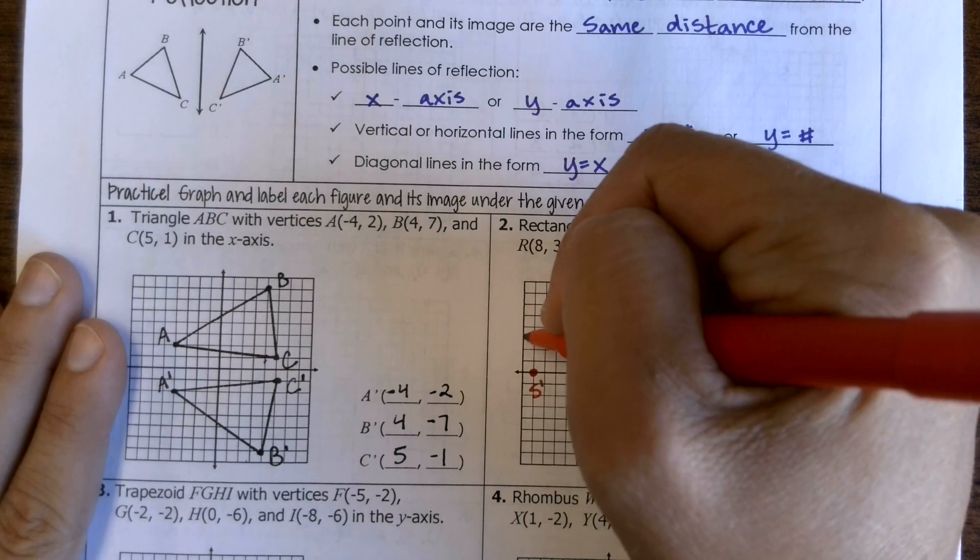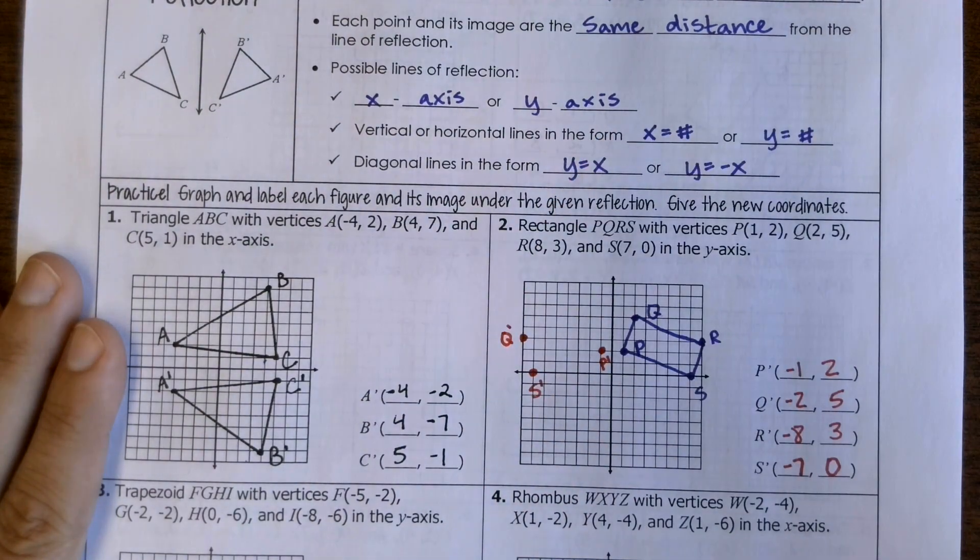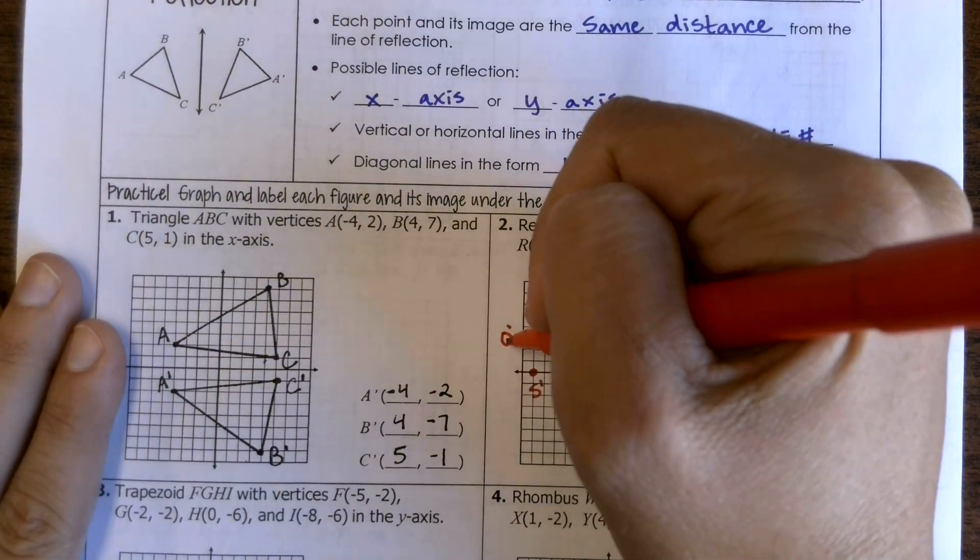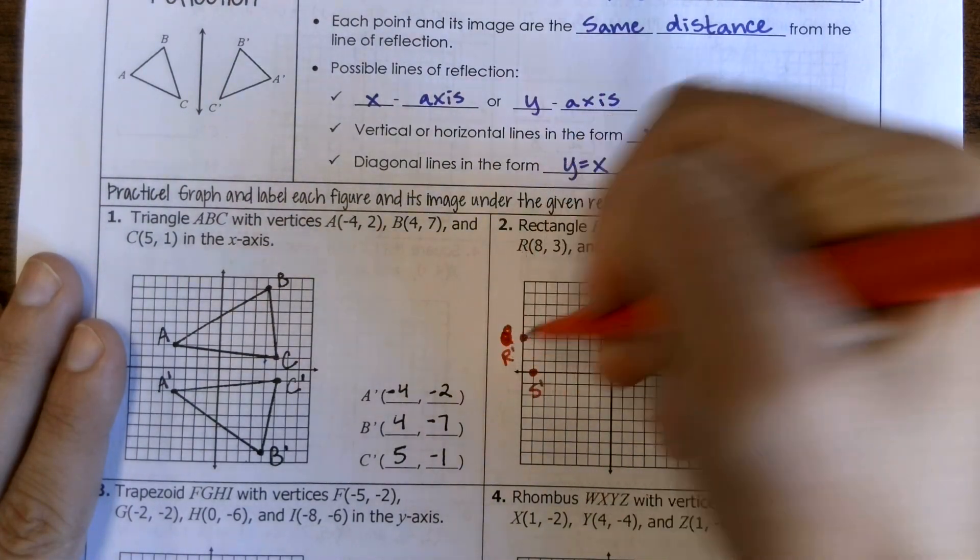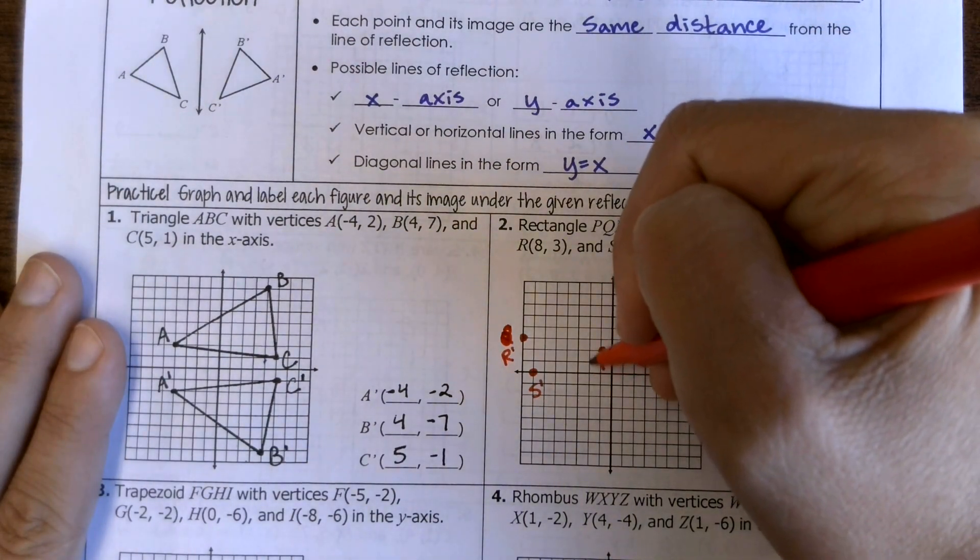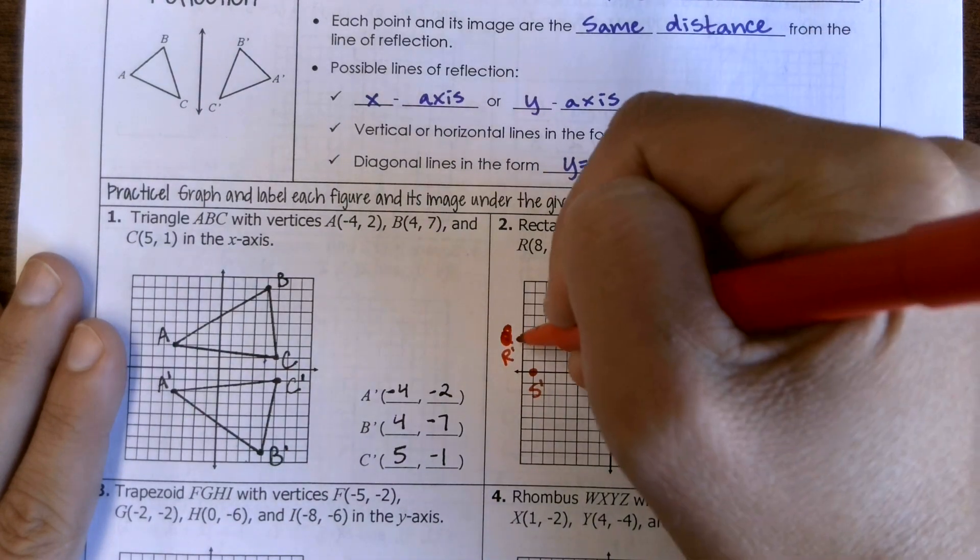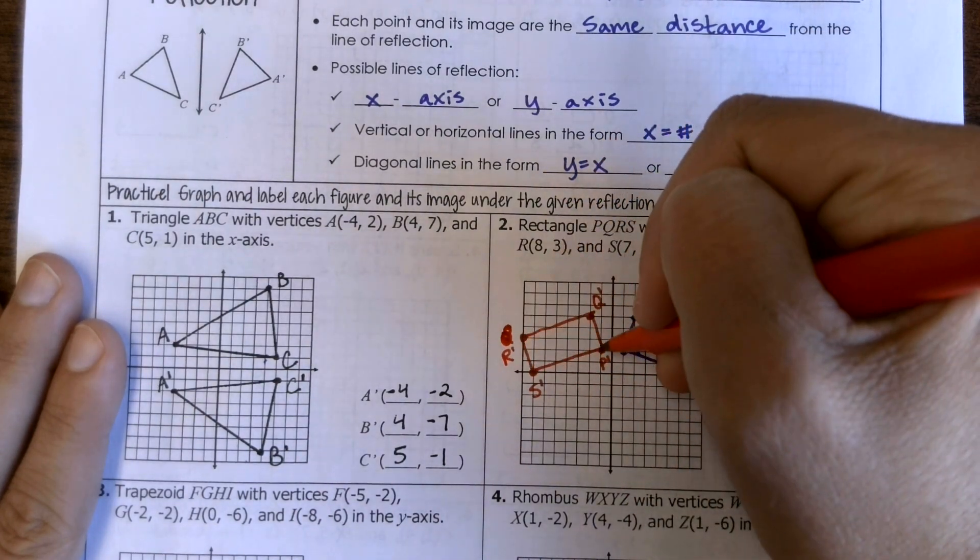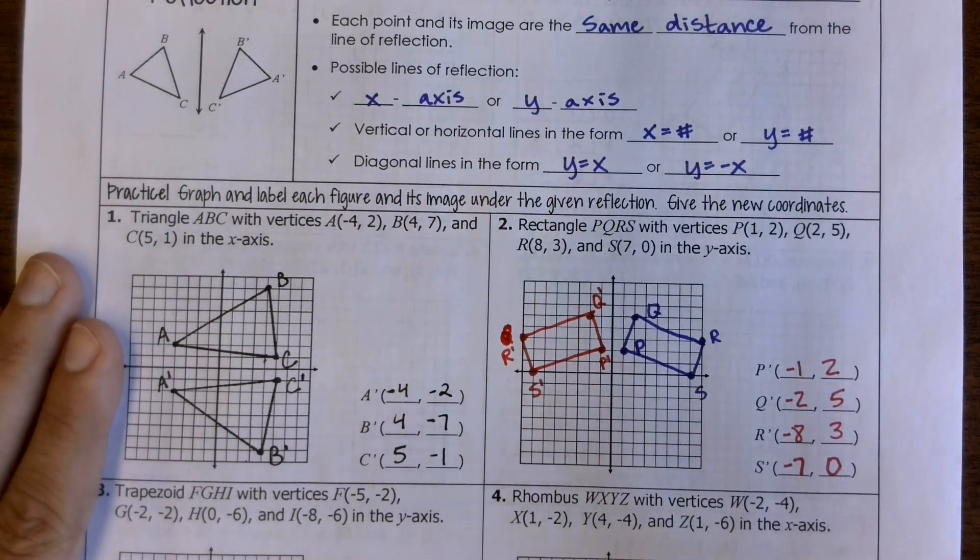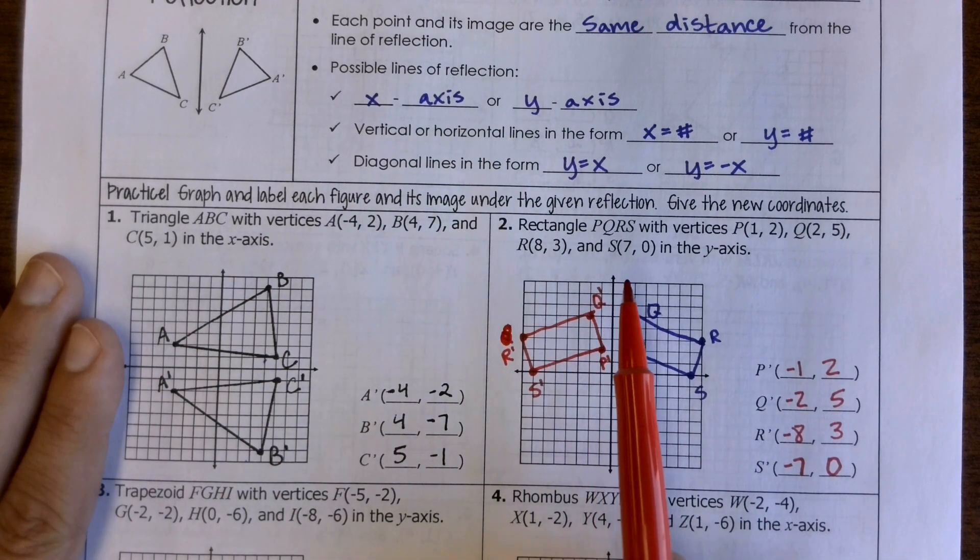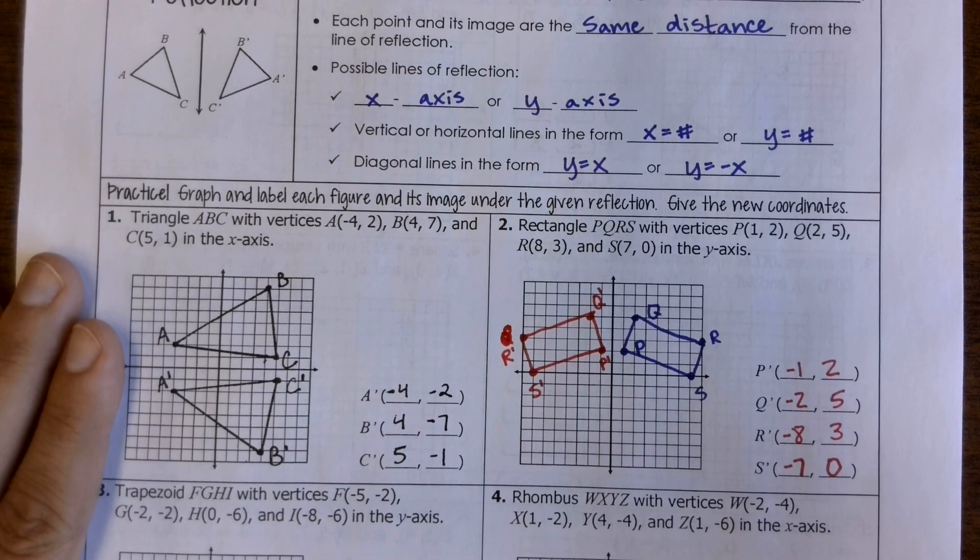and then Q prime was at (-2, 5). And when we're done, we have a really nice visual check because we should be able to see that all of those points, that it is reflected, that this is the line of reflection or the line of symmetry, they're the exact same mirror images on either side.